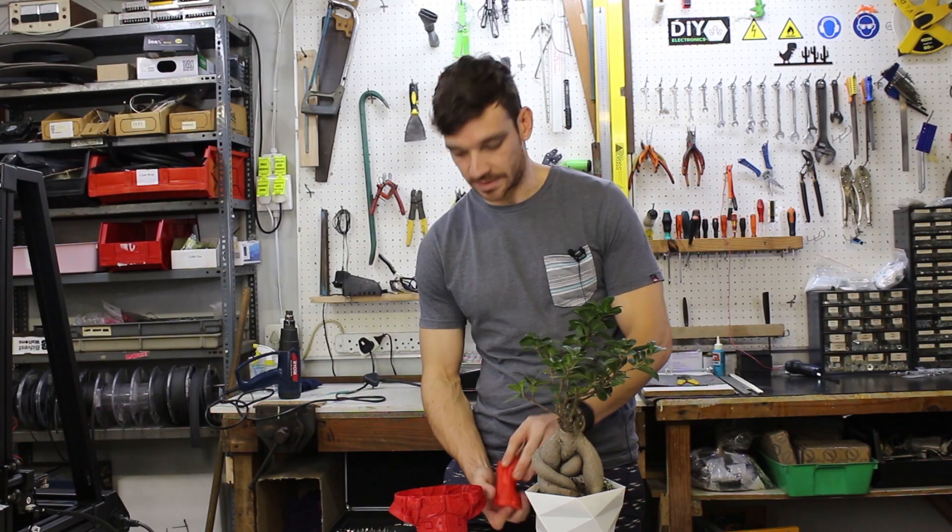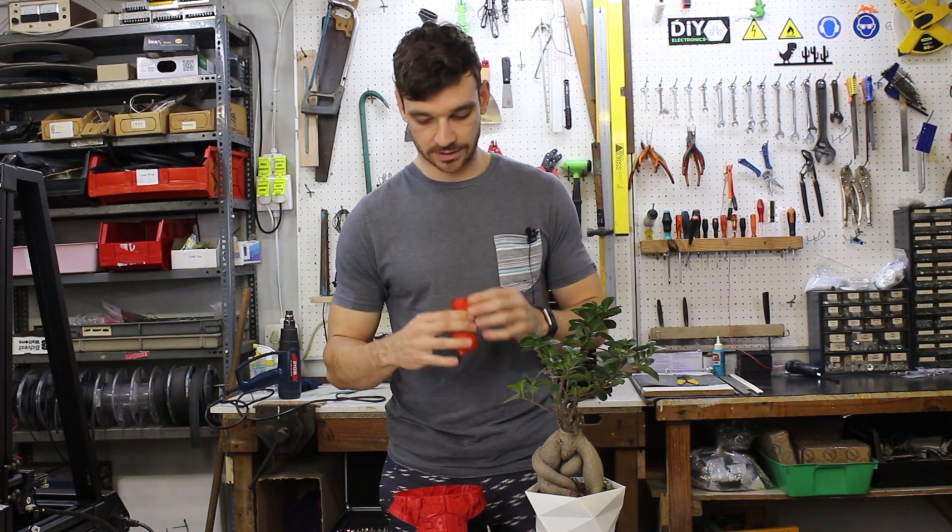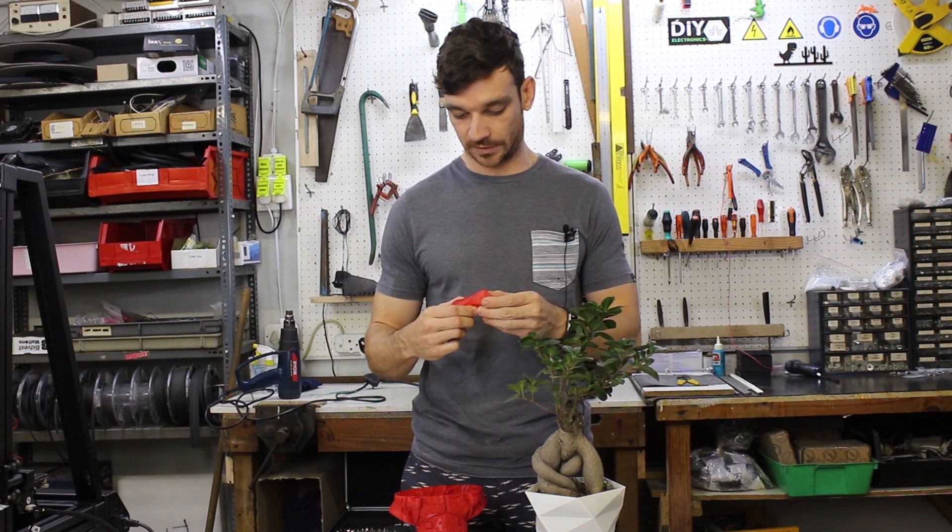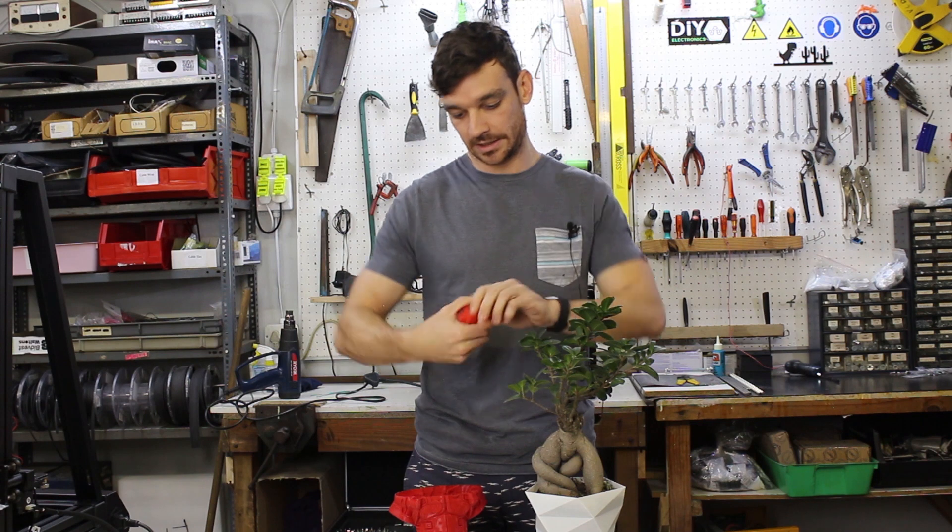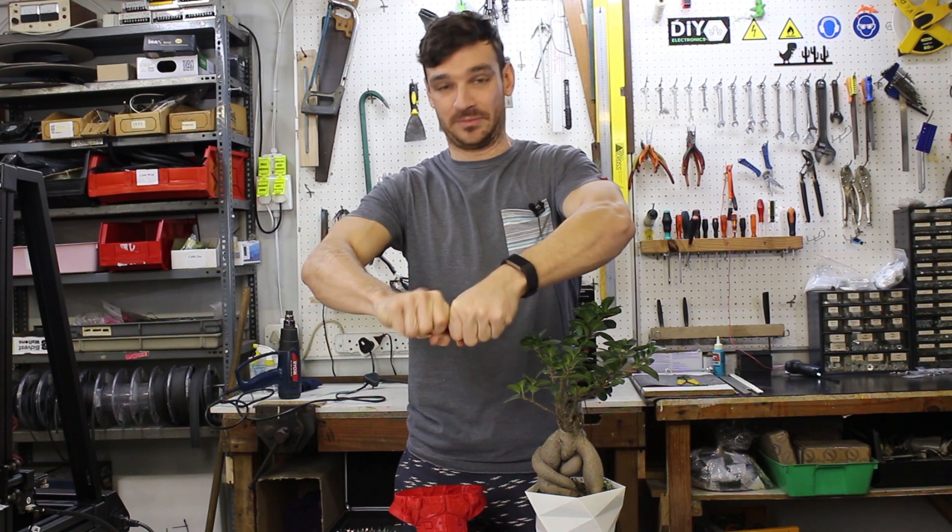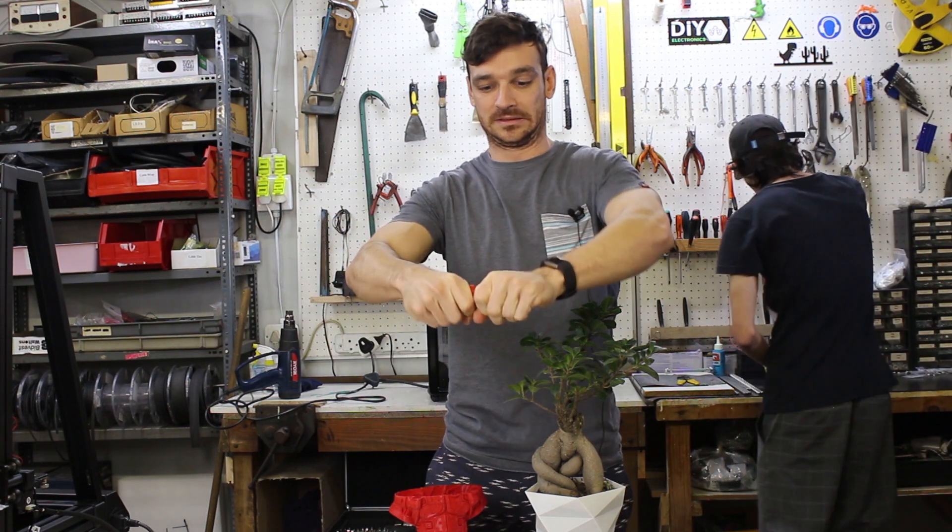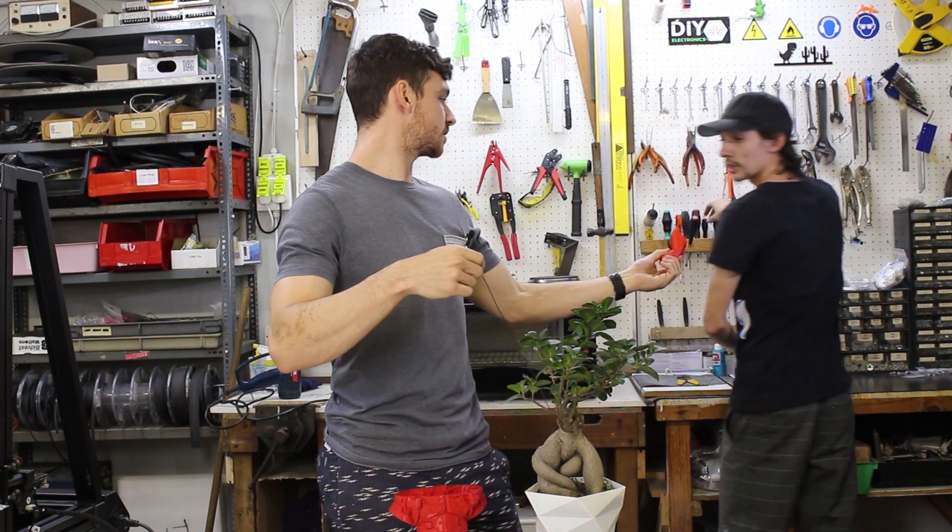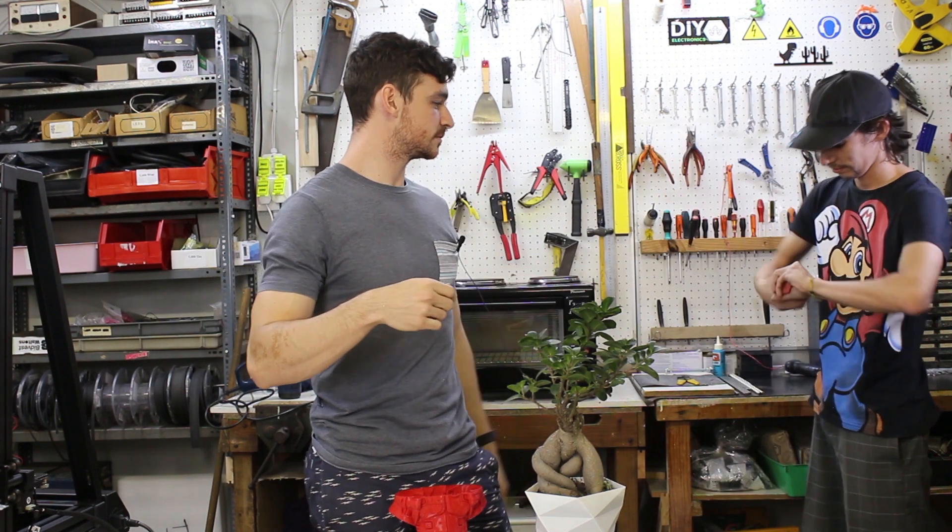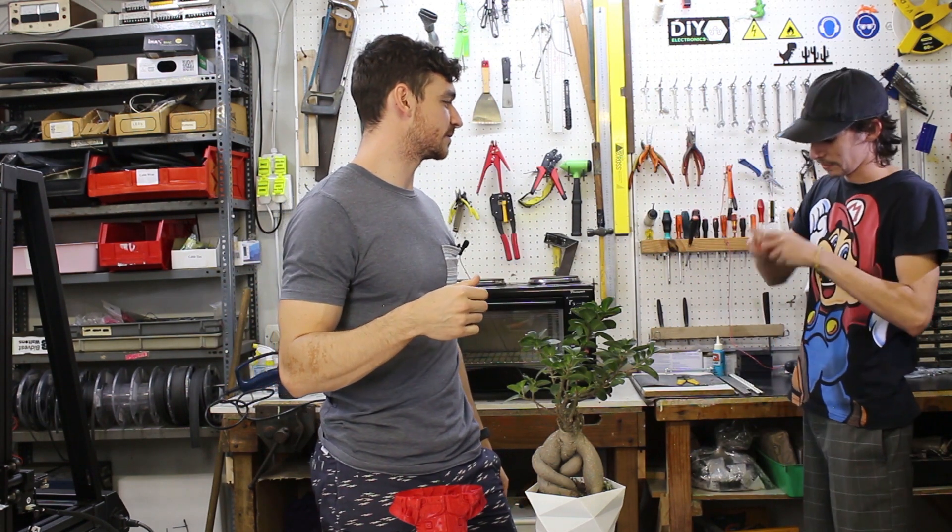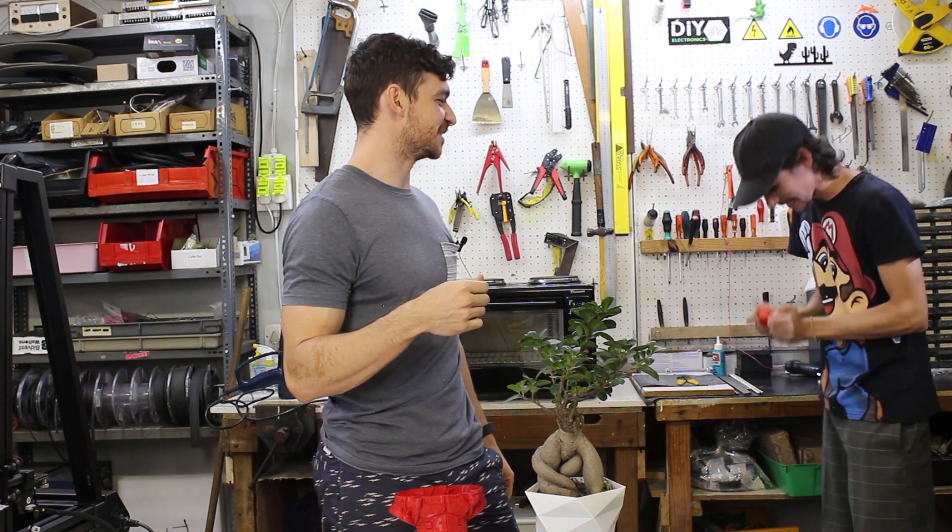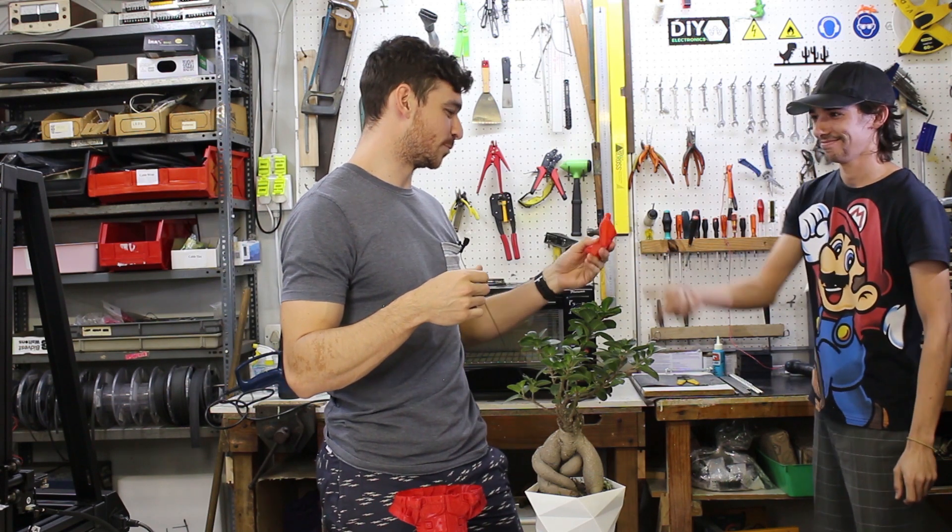We have another sneaky surprise use case here. This is TPU with about only 2% infill and two outline perimeter shells. This is pretty much unbreakable. Jared, try break this. Come on, dude. Try break it. Not eat it. Unbreakable.